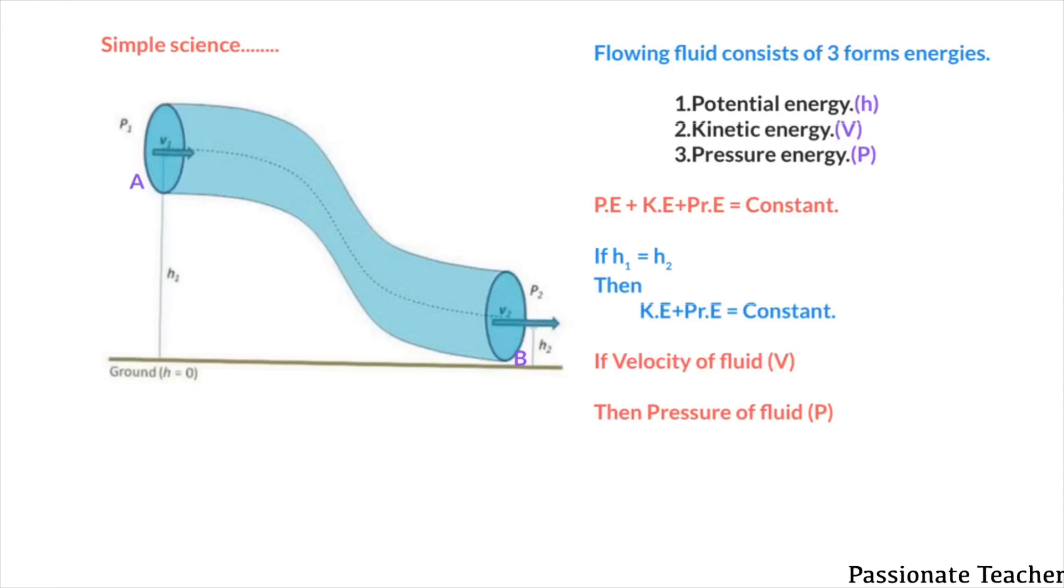As shown in the figure, flowing fluid consists of three forms of energies. First one is potential energy because of its height, kinetic energy because of its velocity, and the pressure energy which is because of its pressure.